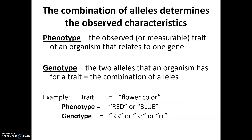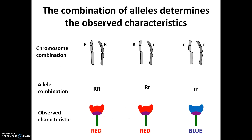The combination of alleles determines the observed characteristics of an organism, and scientists have specific names for this. Phenotype refers to the observed or measurable trait of an organism as it relates to a gene. Genotype is the underlying alleles that an organism has for the trait. So for our example of flower color, the trait is flower color. The phenotype for flower color is either red or blue. The genotype is big R big R, or big R little r, or little r little r. We can replace 'allele combination' with genotype, and 'observed characteristics' with phenotype.